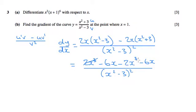Those 2x cubed obviously cancel, and we're left with negative 12x divided by x squared take 3, all squared.